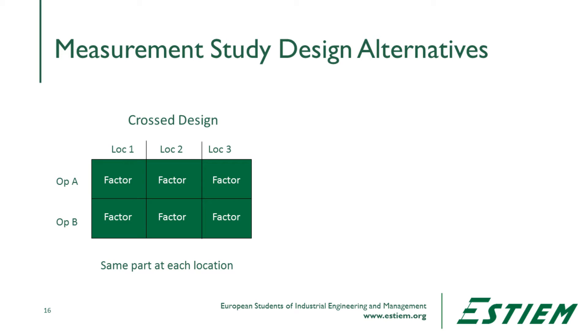There are two different ways to design a measurement system study. One is called a crossed design. In a crossed measurement system, all operators measure exactly the same parts using the same measurement devices or equipment. That way we can compare each person with each piece of equipment and see very clearly the variation within and between people, the variation within and between equipment, as well as any relationship that exists across people and equipment.